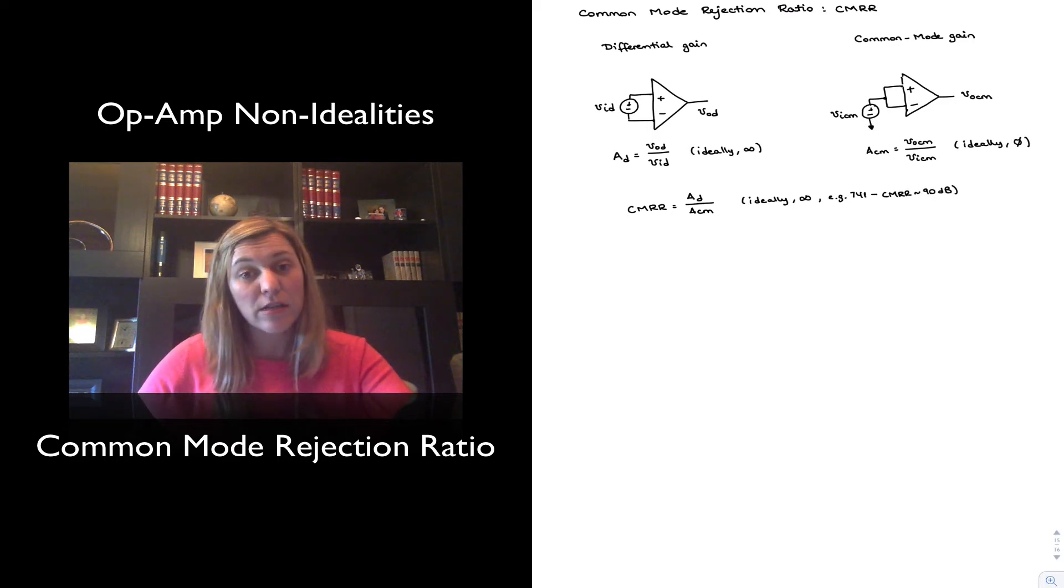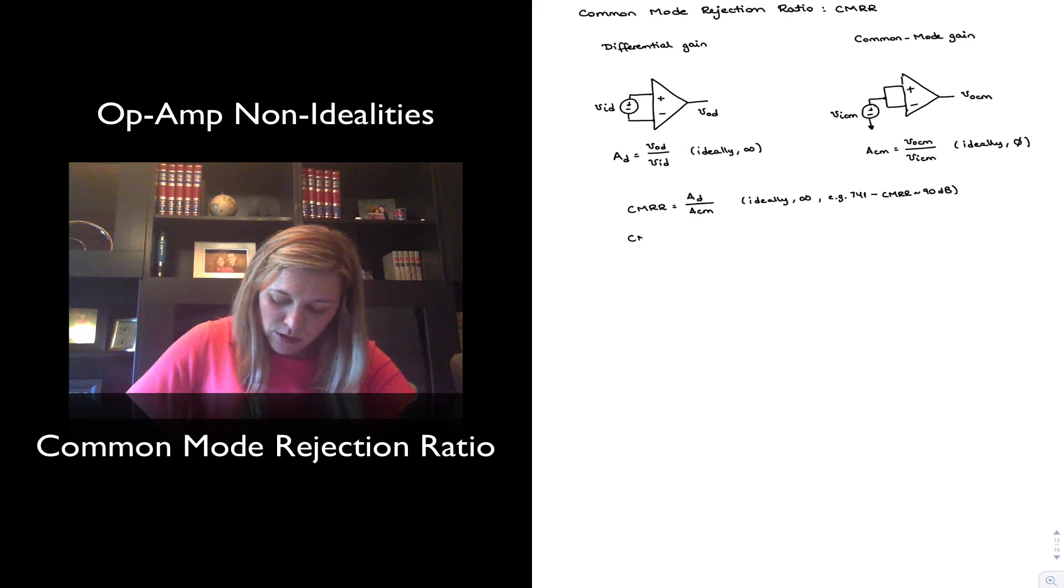The CEMRR is a parameter that appears in the datasheet of an op-amp typically and expressed typically in dBs. If you wanted to calculate the dB value of CEMRR, it will be equal to 20 times the log base 10 of its linear value of AD divided by ACM.